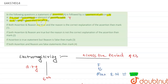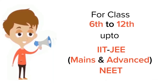Now looking at the options: the reason that chlorine has the highest electron affinity is also true. But electronegativity and electron affinity are different terms with no direct interconnection. Therefore both statements are true, but the reason is not the correct explanation for the assertion. The correct option is option 2: both assertion and reason are true but the reason is not the correct explanation of the assertion.